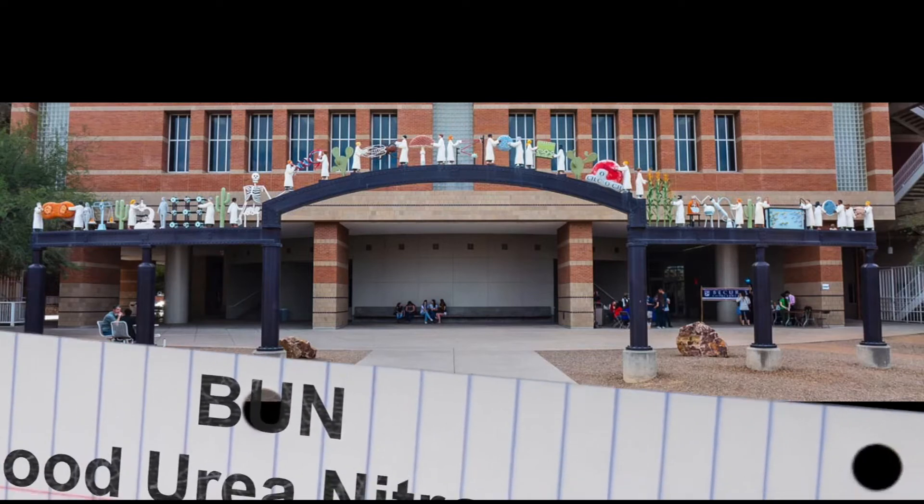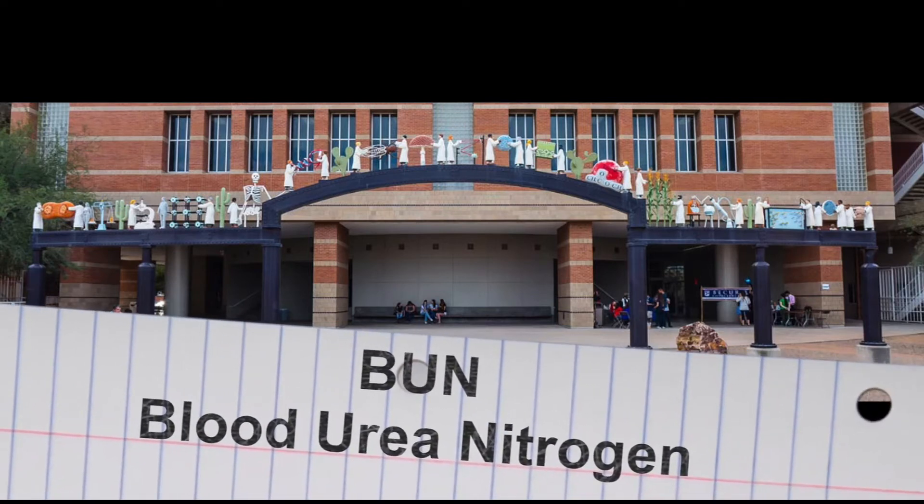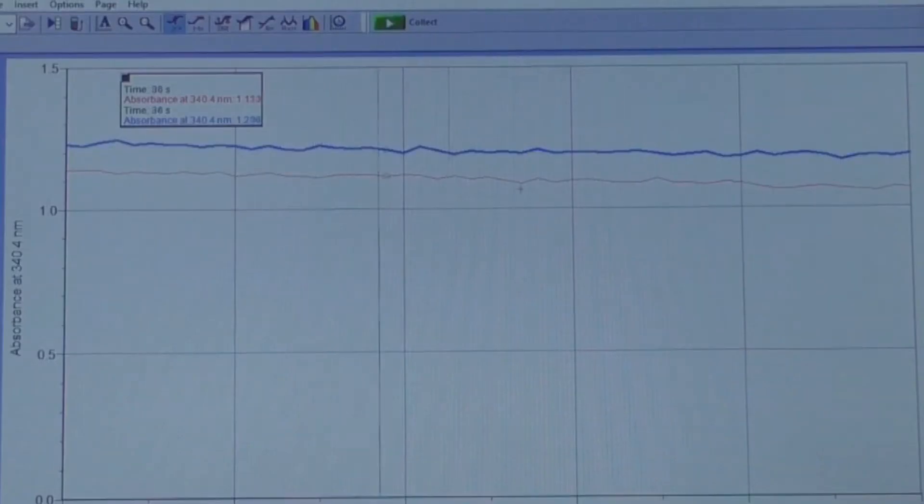This video will show you how to determine the blood urea nitrogen, or BUN level, in a patient's serum sample using a kinetic reaction. You will be observing the change in absorbance in the UV region at 340 nanometers over 60 seconds and comparing your patient sample to a known standard.